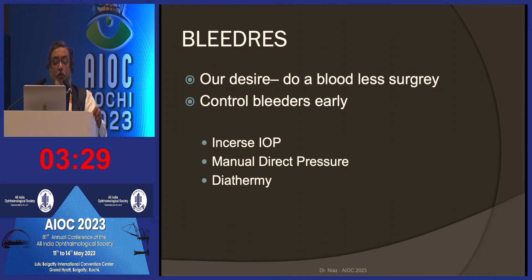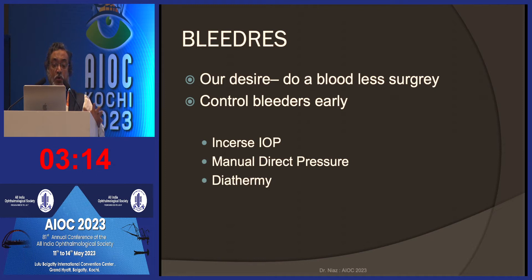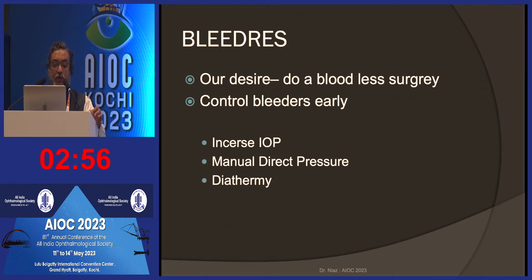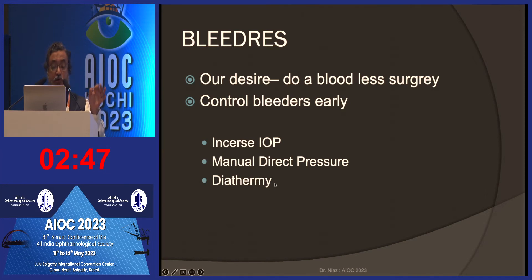Bleeders are very important in these cases — our desire is to have a bloodless surgery. Preoperatively we can give anti-VEGF. But peroperatively, if we have bleeders, we have to control them early and not let our view become obscured. Initially, if there is a small bleeder, you can increase the IOP for a few minutes. If it doesn't stop, you can use direct manual pressure with the tip of your cutter or a blunt instrument, holding it to the bleeding point for a minute. Most of the time it coagulates and the bleeding stops. The last resort is diathermy, which must be used very carefully as it can also injure the retina.